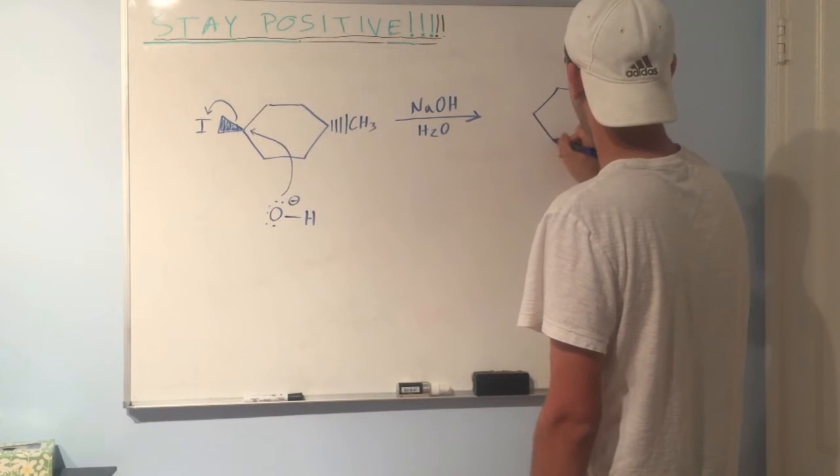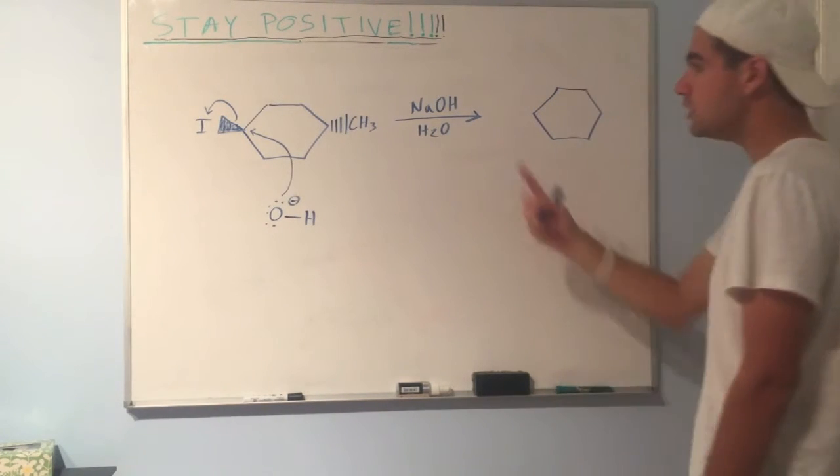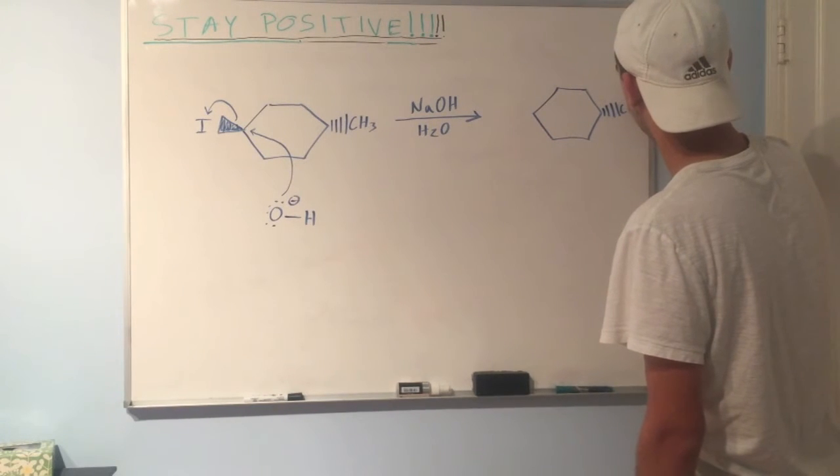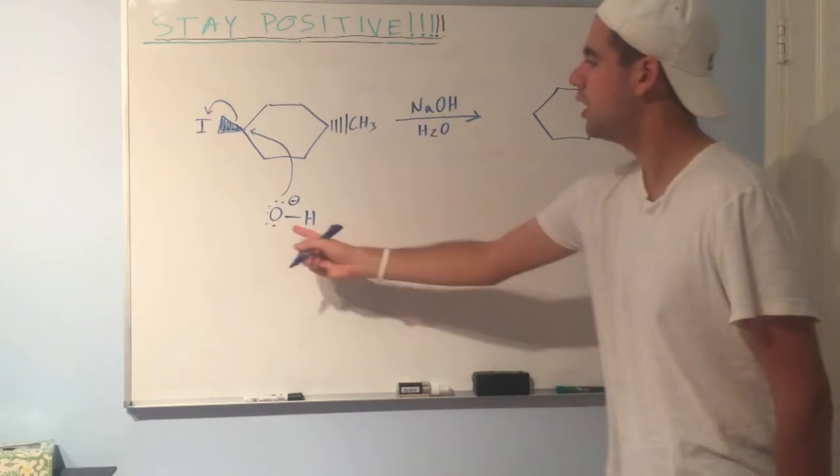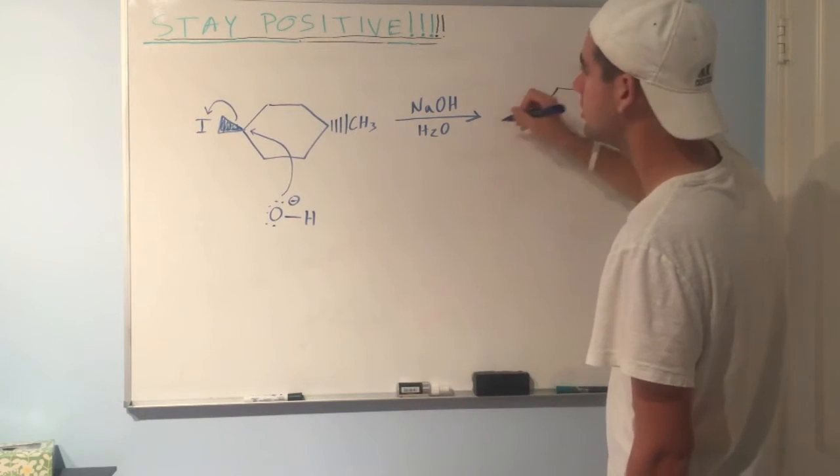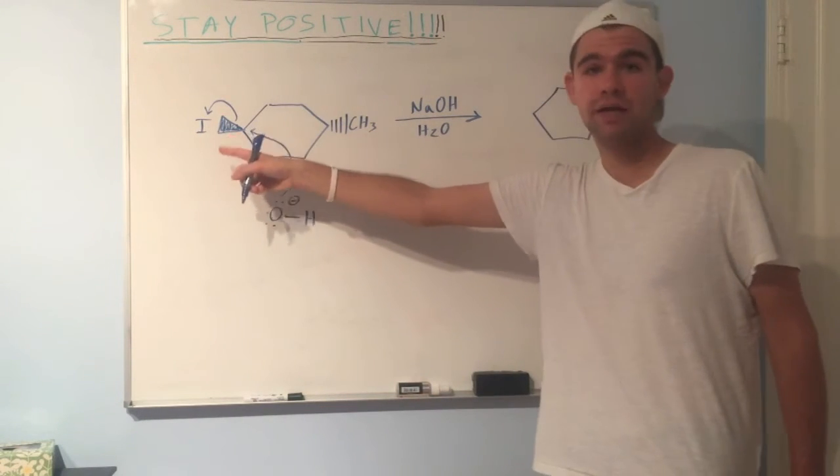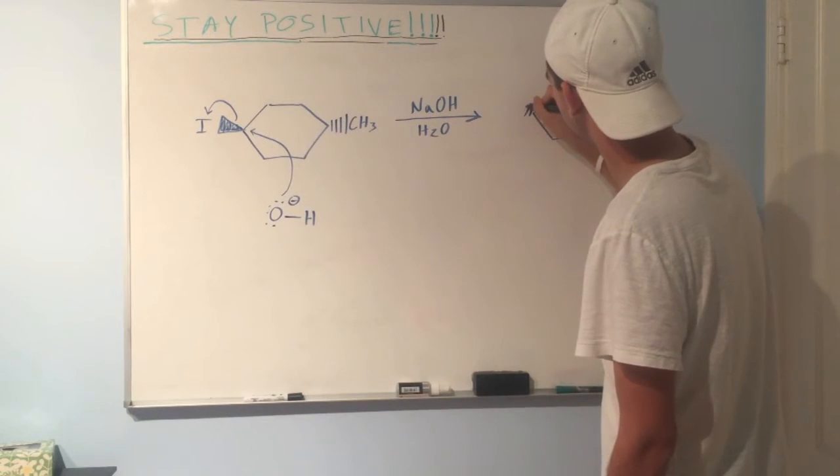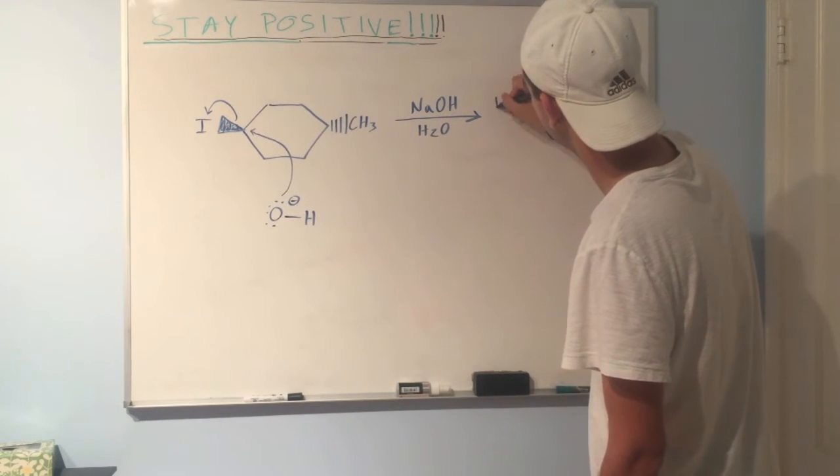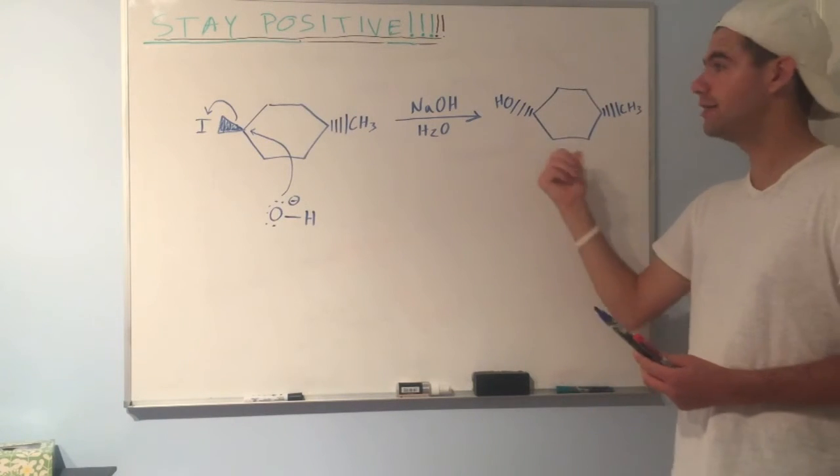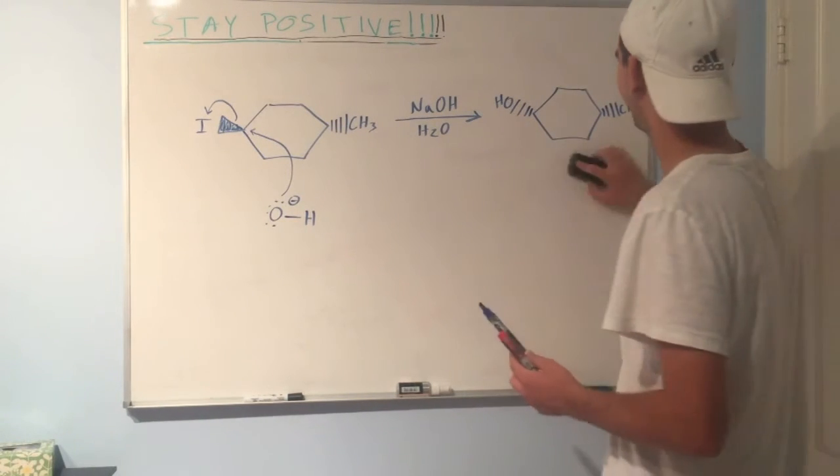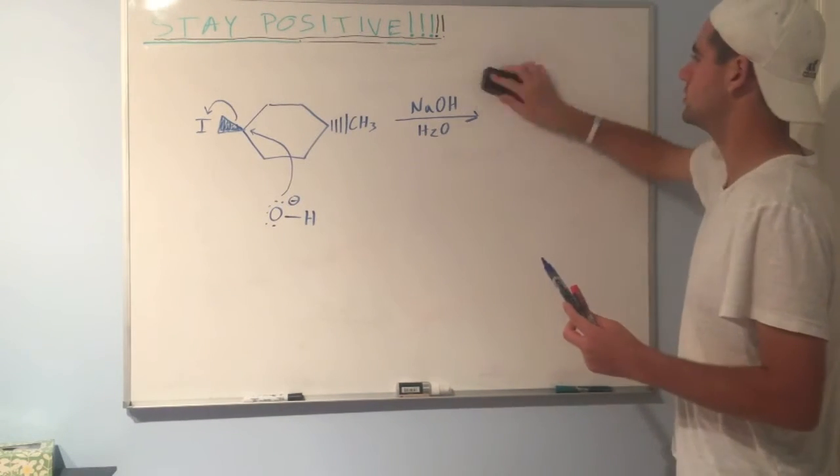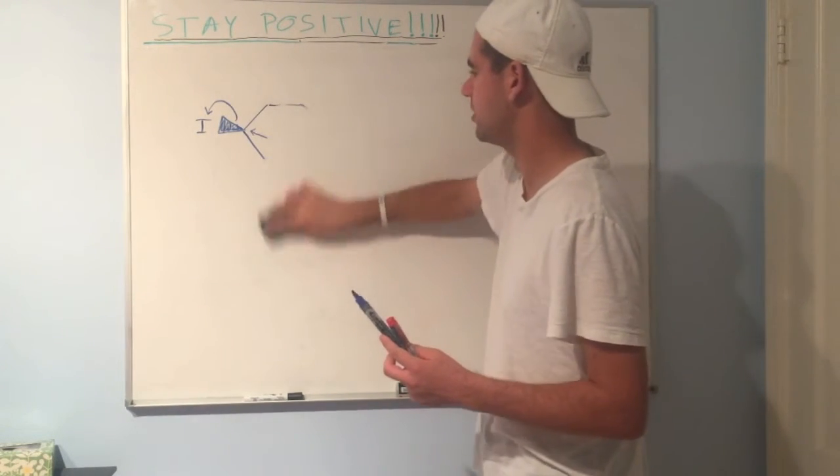So our product will look something like this. The skeleton stays the same. Our methyl group over here is still going to be dashed, just like before, but now our hydroxyl group is going to be dashed as well, right? Because wedge becomes dash, dash becomes wedge in most cases. So here we go. OH. That's the answer. So hope that wasn't too tricky for you. Just know that in SN2, stereochemistry is inverted.